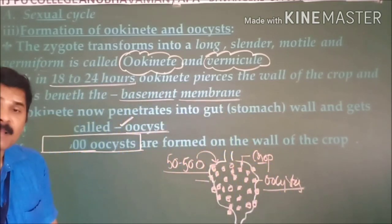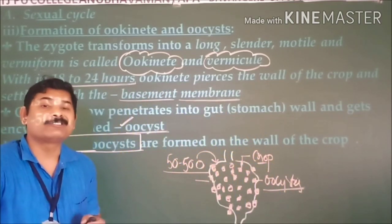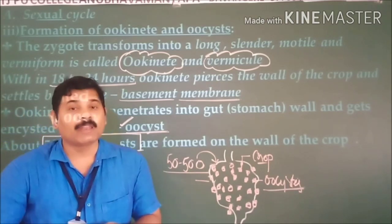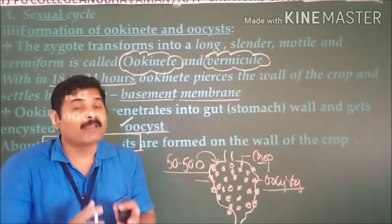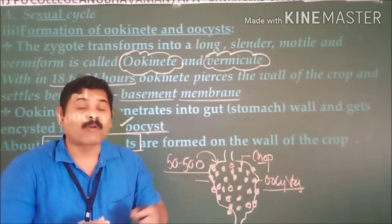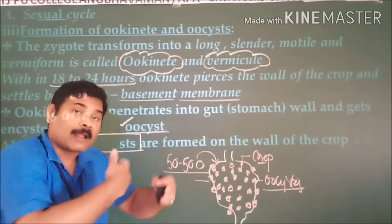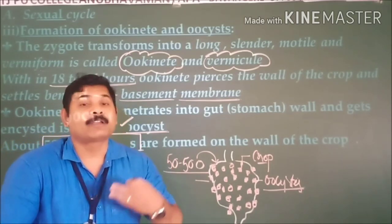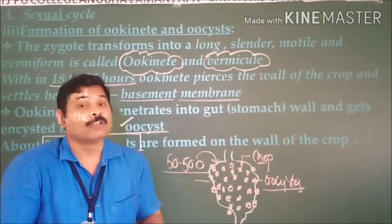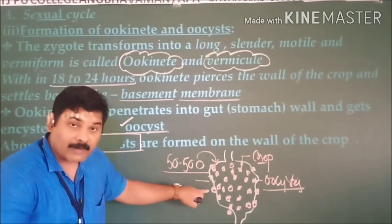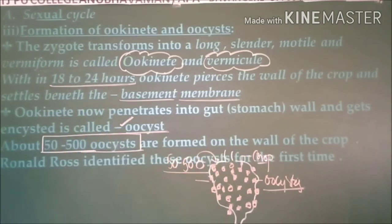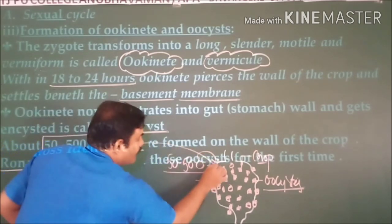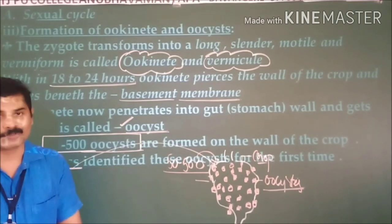Sir Ronald Ross, a British doctor who lived in Secunderabad, carried out research and discovered that female Anopheles mosquitoes act as vectors, transmitting the parasite from an infected person to a healthy person. He was the first person to discover the oocysts on the crop of the mosquito.